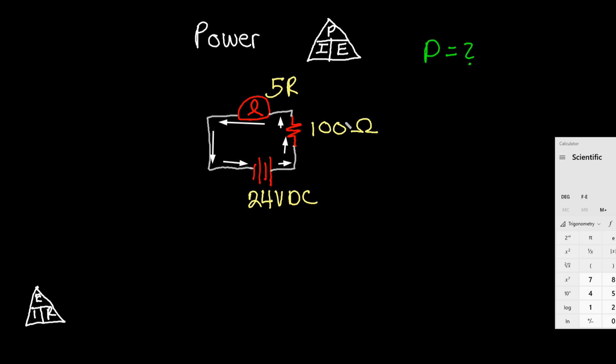So we want to find the power of this circuit. To find the power, we need to know the current. So that is E divided by R. Our E is 24 volts DC, so I will put that in the calculator. 24 volts divided by the resistance. Now, as these are both purely resistive, they can simply be added up. So 5 plus 100 equals 105, and that is the R total in this circuit. So now we know we can find I.